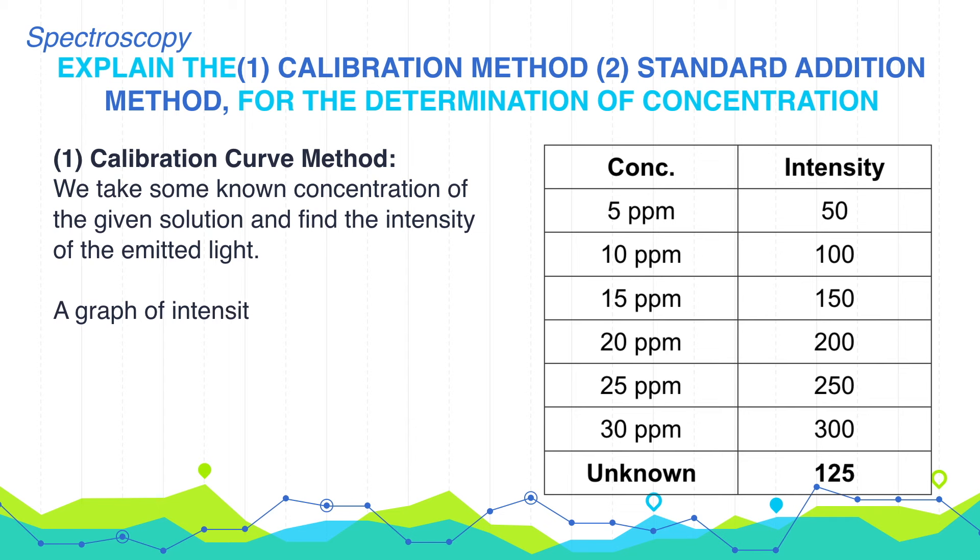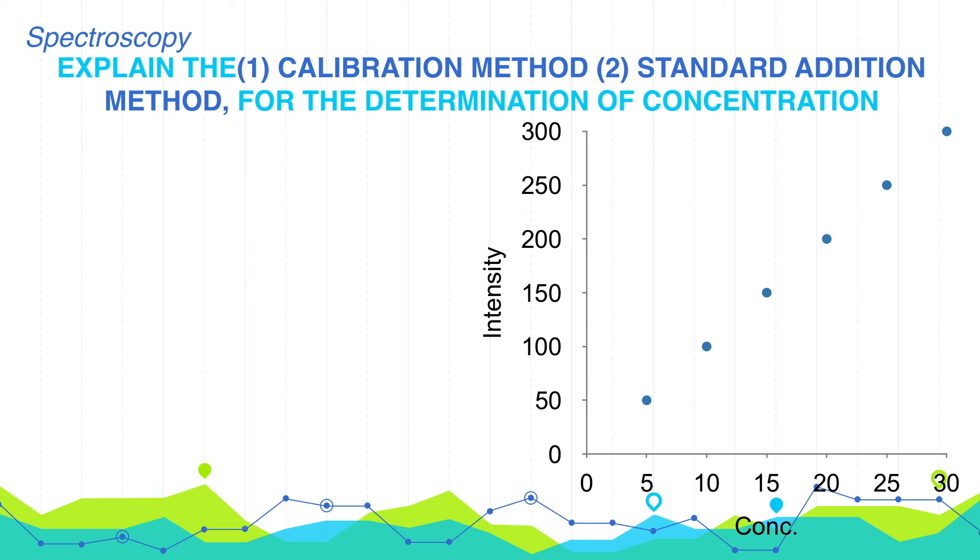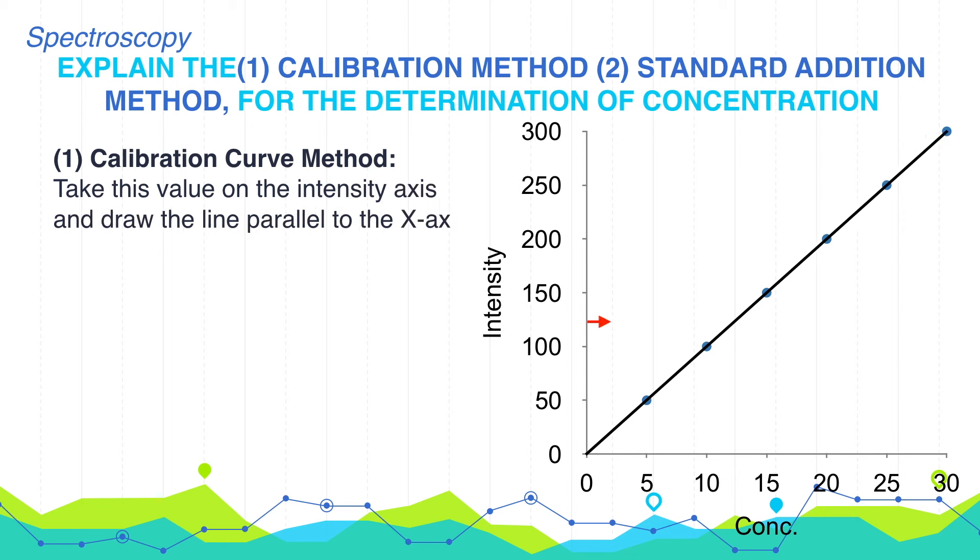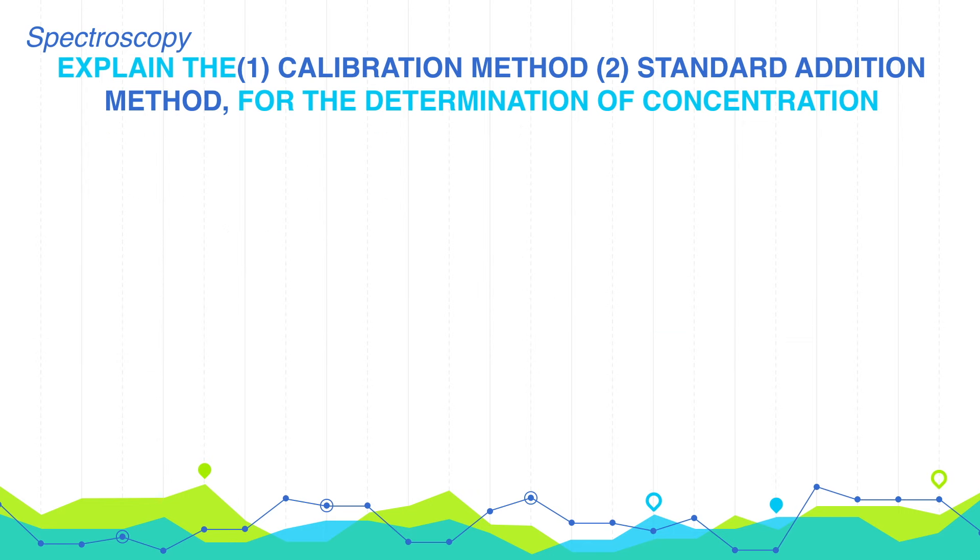A graph of intensity measured versus concentration is plotted. Now the intensity of the test solution is measured, which is given in the table. Take this value on the intensity axis and draw the line parallel to the x-axis where it cuts the standard curve. From there, draw a perpendicular to the concentration axis, which will give the concentration of the unknown solution. The curve plotted is known as the calibration curve, and that's why the method is known as the calibration curve method.